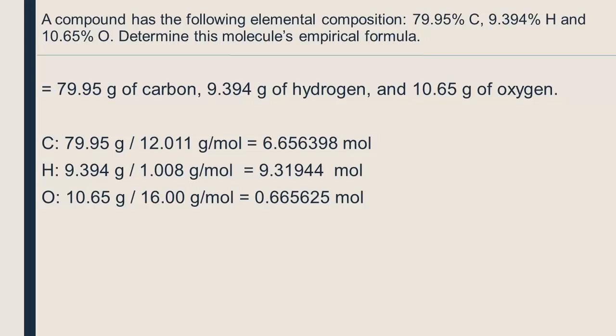Now we need to find a simple ratio between these elements. The final answer should only have whole numbers since we can't have a fraction of an atom in a molecule. In this example, the ratio is not yet evident. We divide all the numbers by the smallest number we obtained in our calculation, which gives us a much simpler ratio.